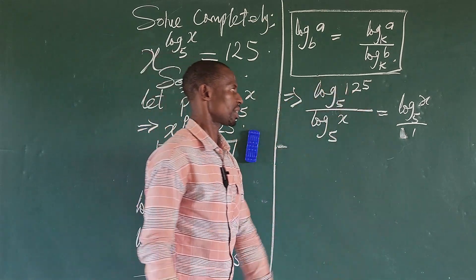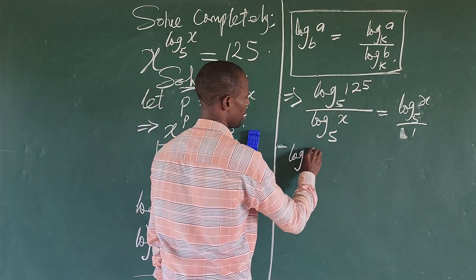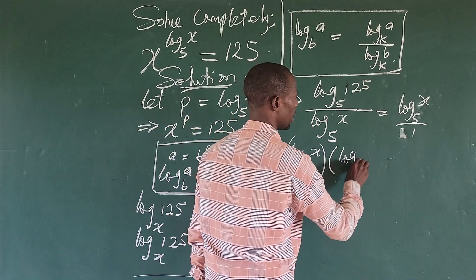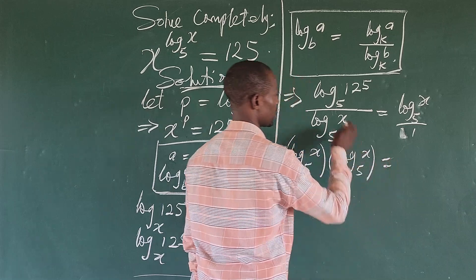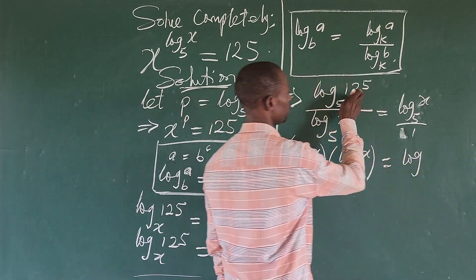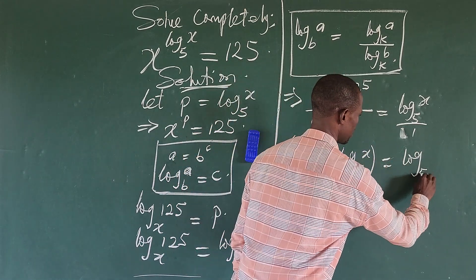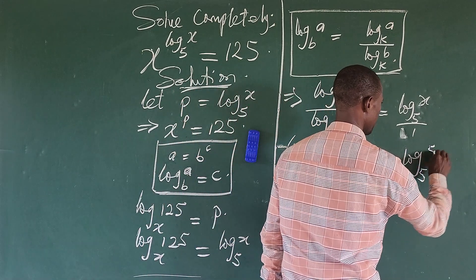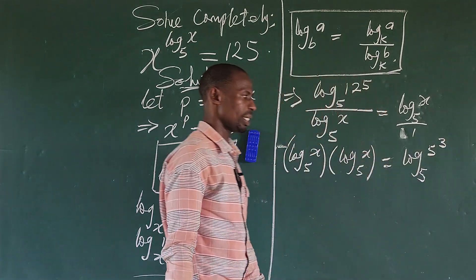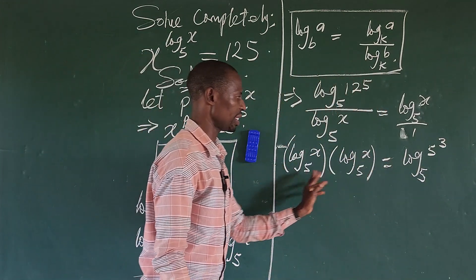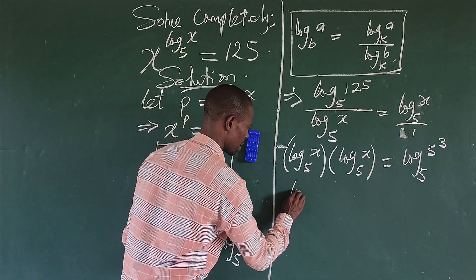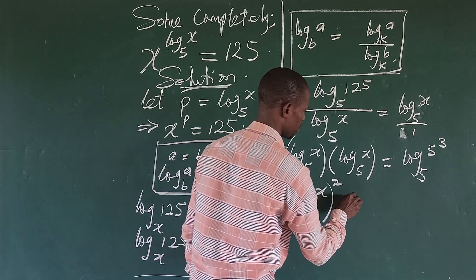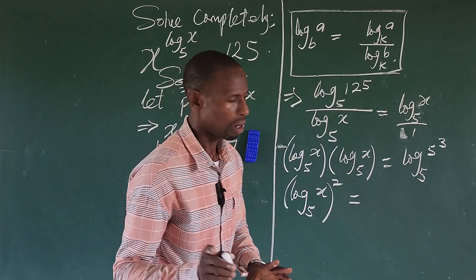Cross-multiplying, we get log_x(5) times log_x(5) equals log_5(125). Note that 125 can be written as 5 to the power of 3. So we now have (log_x 5)^2 equals log_5(5^3).